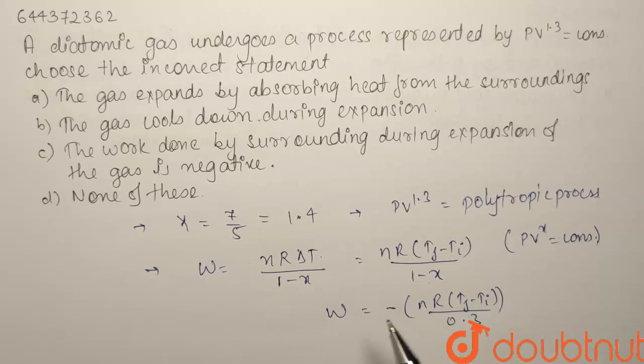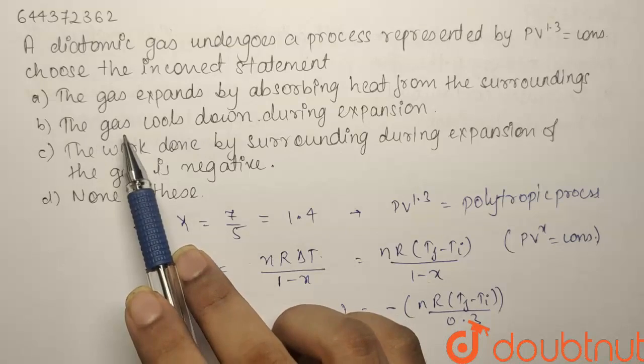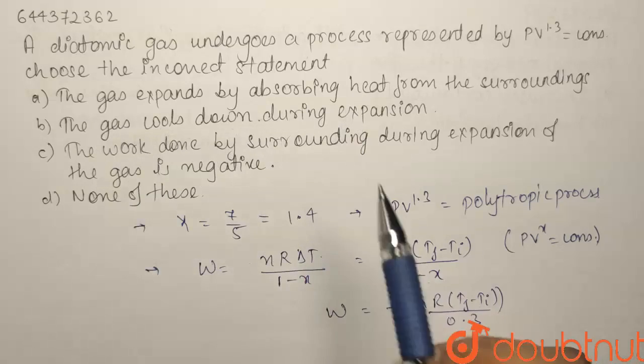So, if you say that the work done is positive, for the work done to be positive, that is for expansion to happen, this term should be negative. That is the final temperature should be lower than that of the initial temperature. Then only these two minus signs are going to cancel each other. So, if you have a look at the B option that it says that gas cools down during expansion.